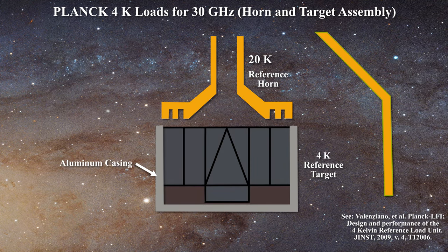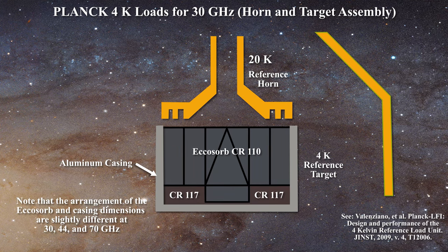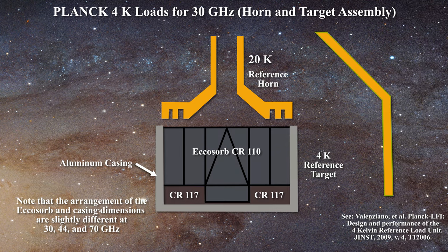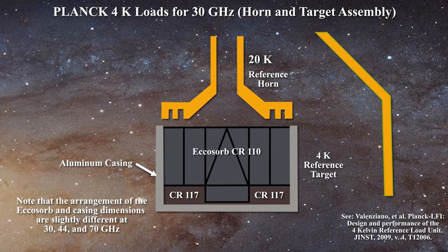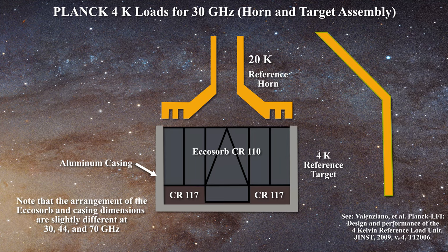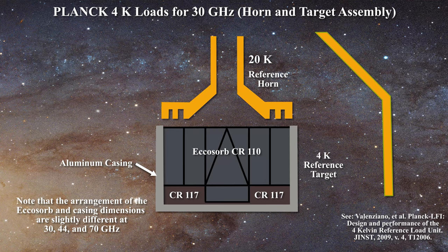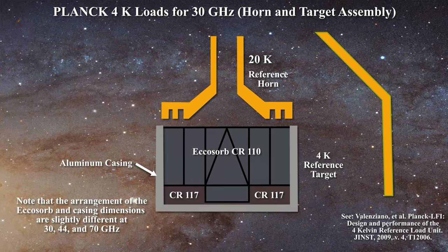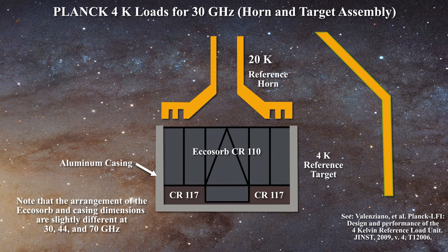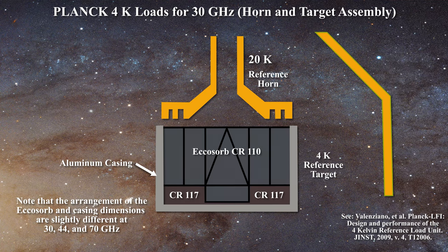Second, an aluminum casing filled with Echosorb is supposed to be acting as a blackbody target. The Echosorb used in attempting to make this blackbody is often employed to absorb microwaves in anechoic chambers. According to the manufacturer, Echosorb is a high loss microwave absorber which is designed to attenuate electromagnetic waves by converting RF energy into heat. The Planck team utilizes two types of Echosorb, known as CR110 and CR117 respectively, which are shown in different colors on the diagram.